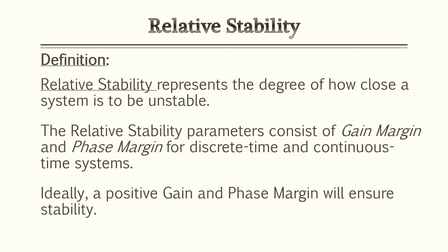Relative stability represents the degree of how close a system is to being unstable. The relative stability parameters consist of the gain margin and the phase margin for both discrete time and continuous time systems. Ideally, a positive gain margin and a positive phase margin will ensure stability. For this lesson we'll be mostly focusing on open loop transfer functions of systems.